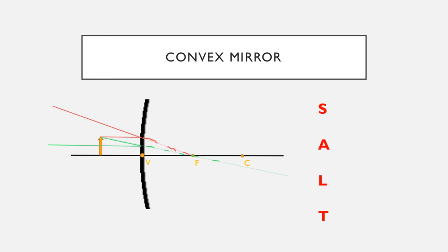So the reflected ray is the one that has come back parallel to the principal axis. So what we're going to do is if we extend this reflected ray back behind the mirror.